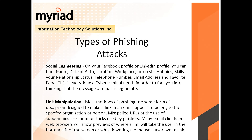The next type is link manipulation. This method uses deception designed to make a link in an email appear to belong to a spoofed organization or person. Sometimes the link is misspelled, or attackers use subdomains — common tricks used by phishers. That's why it's important to look at links carefully. Many email clients or web browsers will show a preview of where a link will take you in the bottom left of the screen while hovering on it.